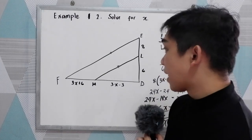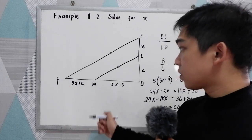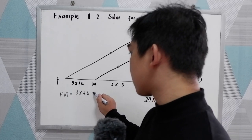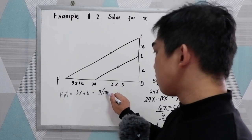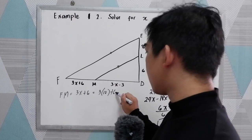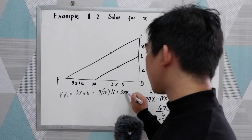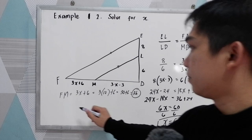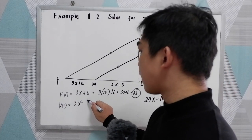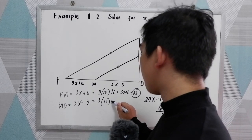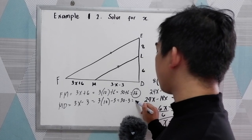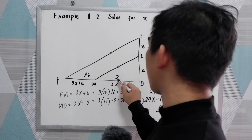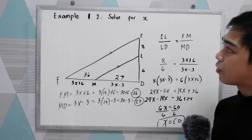If your teacher asks for the measure of FM: FM is 3X plus 6. Substituting X equals 10 gives 3 times 10 plus 6, that is 30 plus 6, which equals 36. For MD, that is 3X minus 3: 3 times 10 minus 3 equals 30 minus 3, which is 27. So FM is 36 and MD is 27.